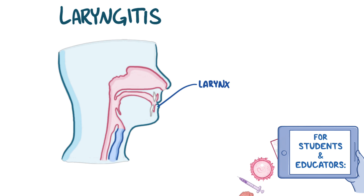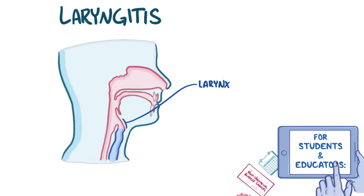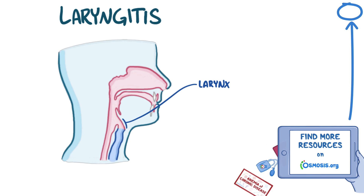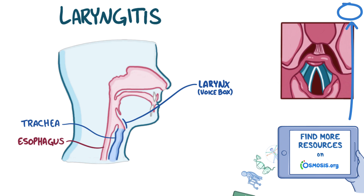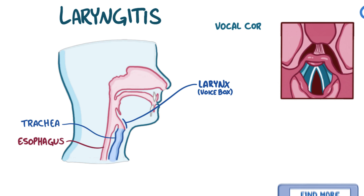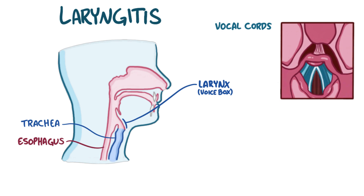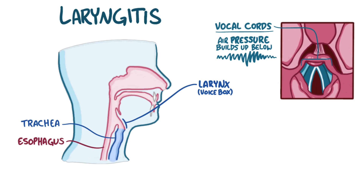The larynx is located in the upper portion of the neck, just below where the pharynx splits into the trachea and the esophagus. The larynx is also called the voice box because it contains the vocal cords, which are two folds of mucous membrane that can open and close like curtains. When they're closed, air pressure builds up below them, causing them to vibrate and produce sound when we speak.